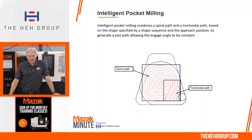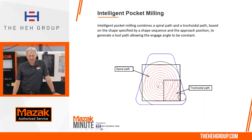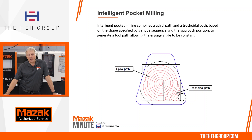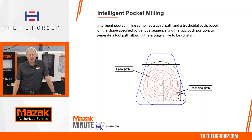Intelligent pocket milling combines a spiral path and a trochoidal path based on the shape specified by the shape sequence and the approach position, to generate a toolpath allowing the engaged angle to be consistent. A lot of times you'll start in the center of the pocket — instead of taking a straight line cut as in the past, it will now take a spiral, helically down into the pocket and spiral out, and then once it gets into a corner you'll see the trochoidal toolpath work its way into the corners.